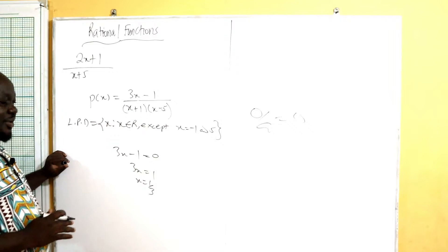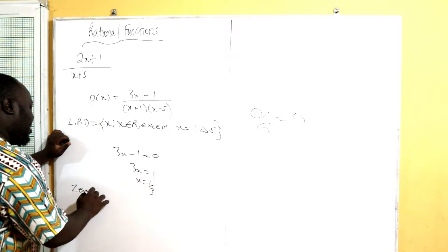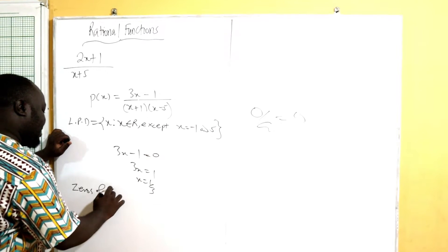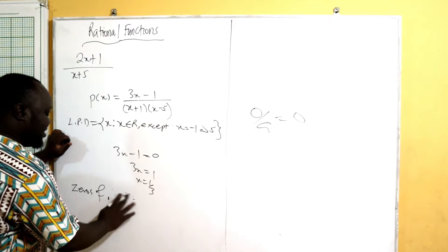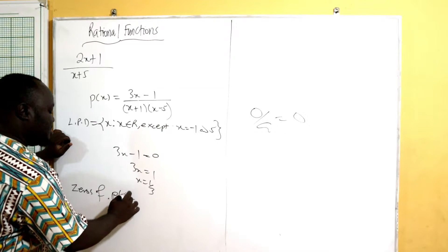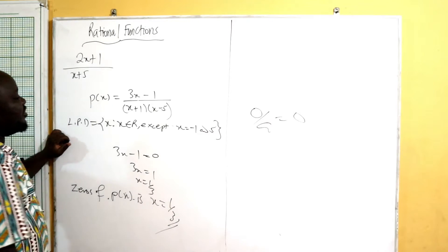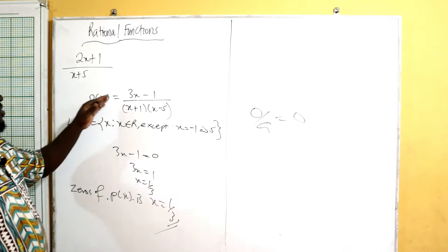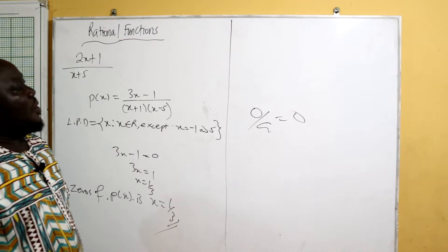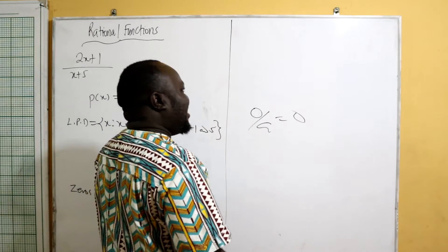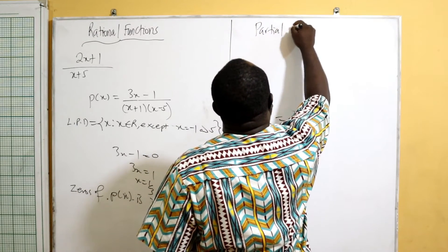So the zero over any number becomes zero. Therefore, the zero of p of x is x equals one over three. When x is one over three, you shall have the zero of this function. We can also now talk about partial fractions.